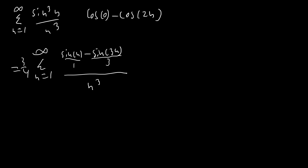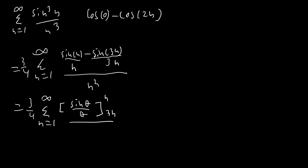Next, we take this n cubed and make it n squared, dividing by n on top, and rewrite this as three-fourths times the sum from n equals 1 to infinity of sine(θ)/θ evaluated at n and 3n, all over n squared. Now, we'd usually differentiate inside with respect to θ, but that gives us (θ cos θ − sin θ) / θ², which is really nasty and doesn't lead to an easy integral.